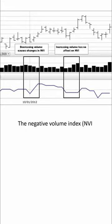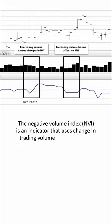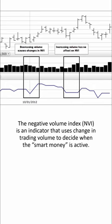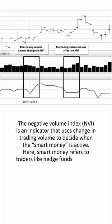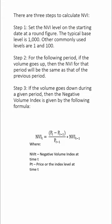The Negative Volume Index (NVI) is an indicator that uses change in trading volume to decide when smart money is active. Smart money refers to traders like hedge funds and asset managers at major investment firms. There are three steps to calculate NVI.